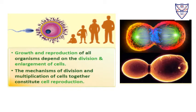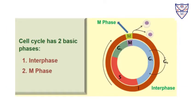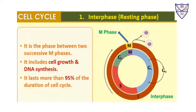The cell cycle has two basic phases: interphase and the M phase. M phase is the mitotic phase. Interphase is generally the resting phase — it is the phase between two M phases. It includes cell growth and DNA synthesis, and it will last for more than 95% of the duration of the cell cycle.